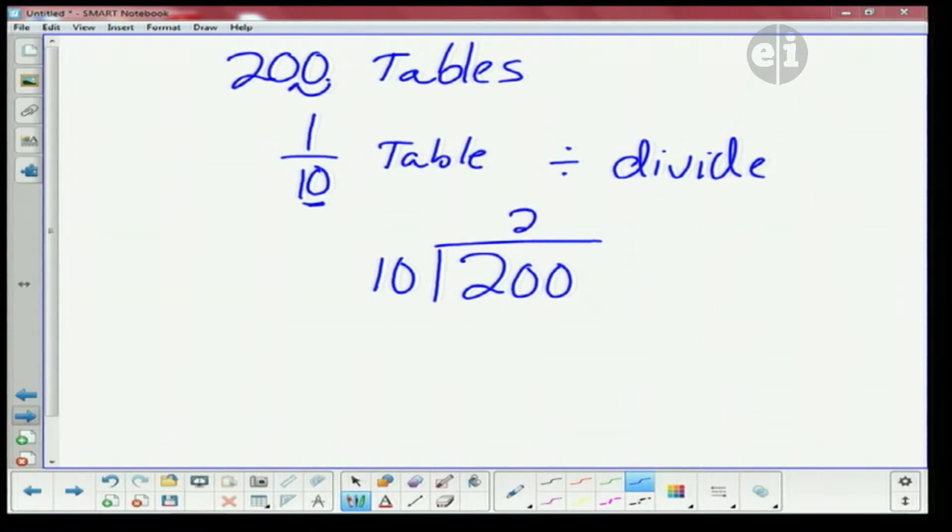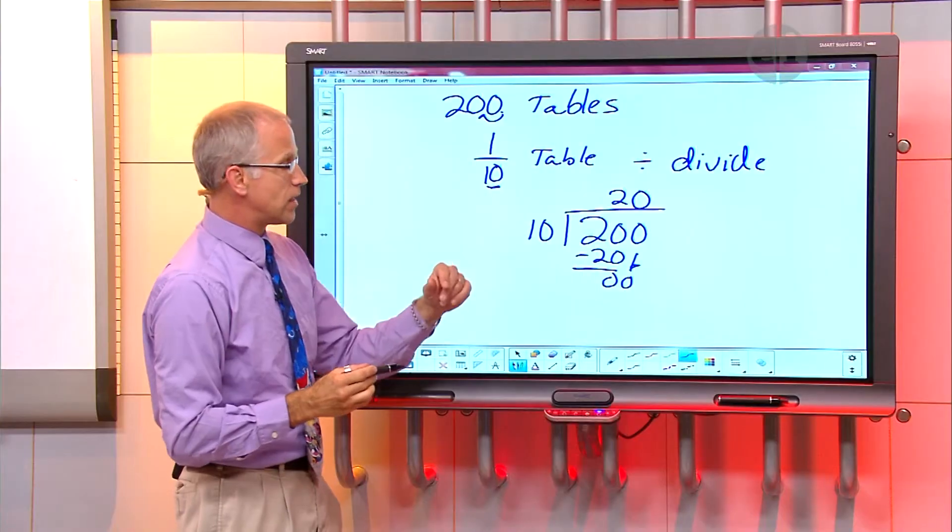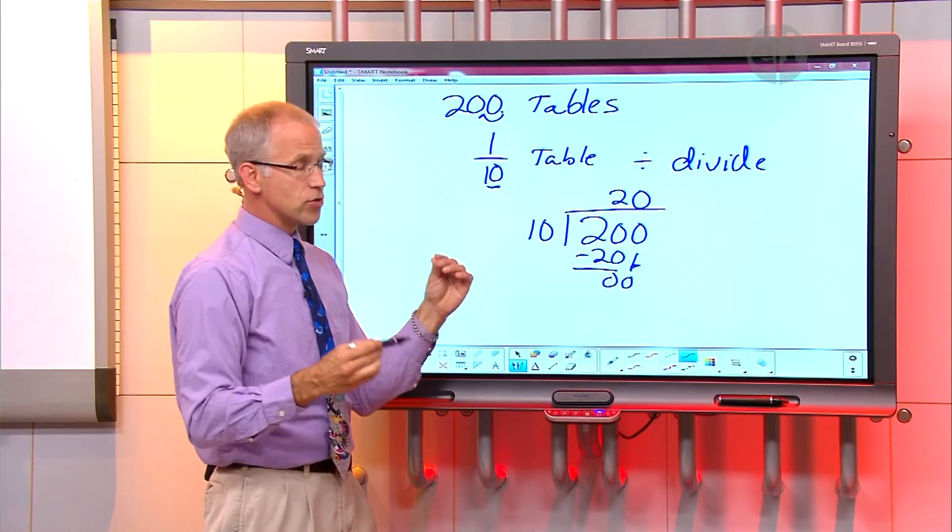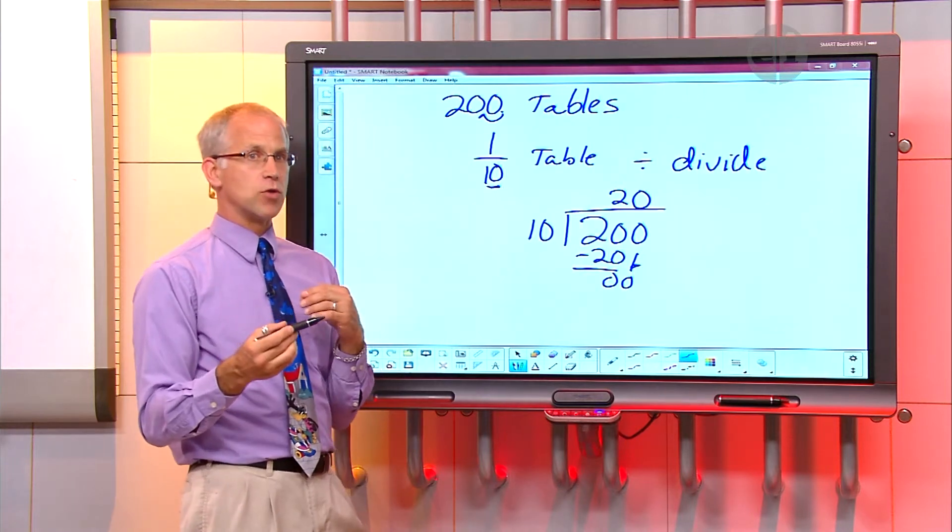Twice. It goes in two, and I multiply, I get twenty. And when I subtract, I get zero, and I bring my zero down. So I know ten goes into zero, zero times. So what I'm actually doing when I divide by ten and hundreds or thousands, I'm moving my decimal place over.